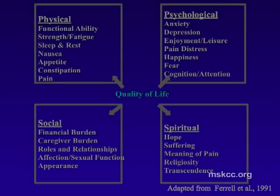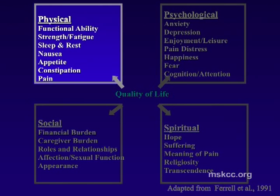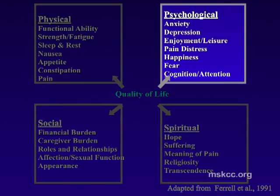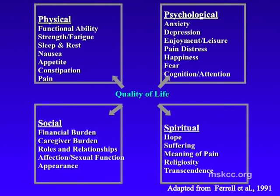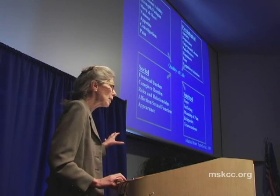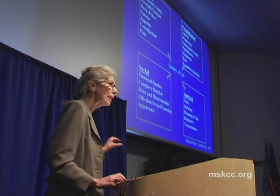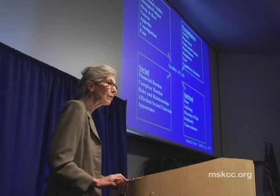Looking more closely at quality of life, physical well-being includes things like functional ability, fatigue, sleep and rest, nausea, appetite, constipation, and very importantly, pain. Psychological aspects include anxiety, depression, distress associated with pain, fear, and difficulty concentrating. Social and spiritual aspects of quality of life are also addressed. These are all aspects a palliative care team addresses depending on the needs of that particular patient and family — it is very much individualized care.